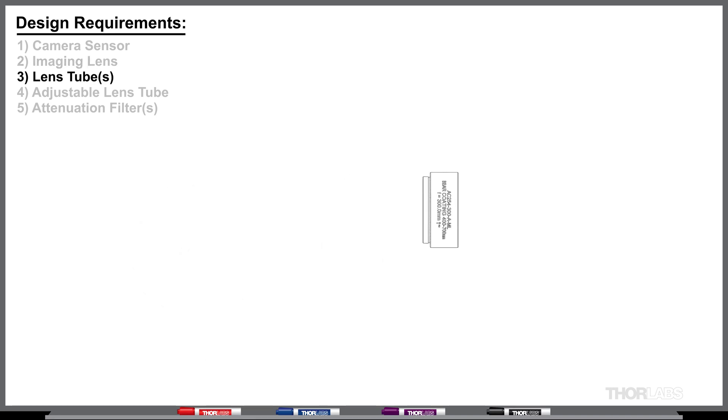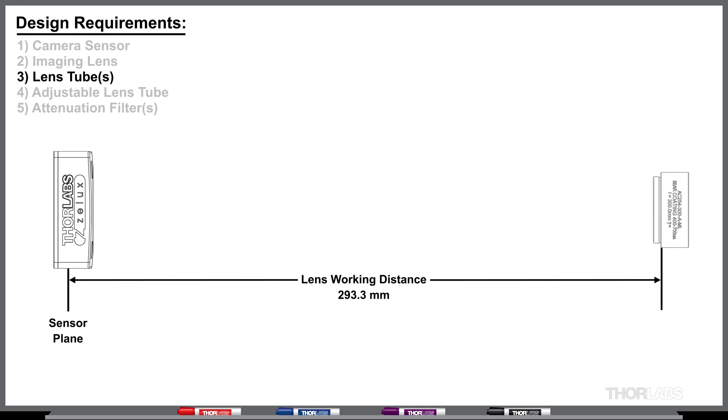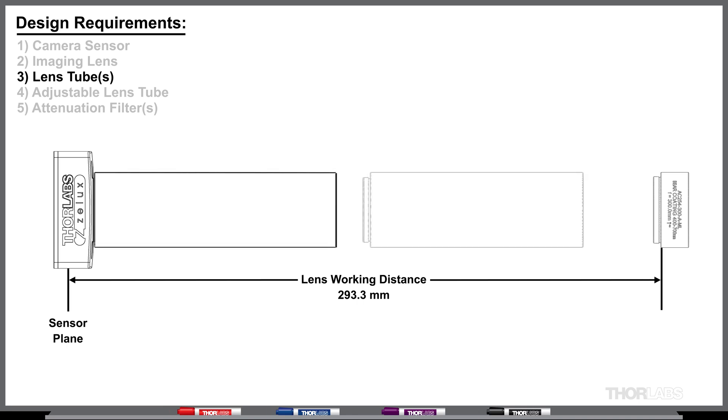The choice of lens dictates the spacing required between the lens and camera sensor, letting us select a combination of lens tubes to provide the correct separation. To account for adjustment of the lens to sensor distance, a 1.5 inch long adjustable lens tube is used to allow a relatively large range for focus.